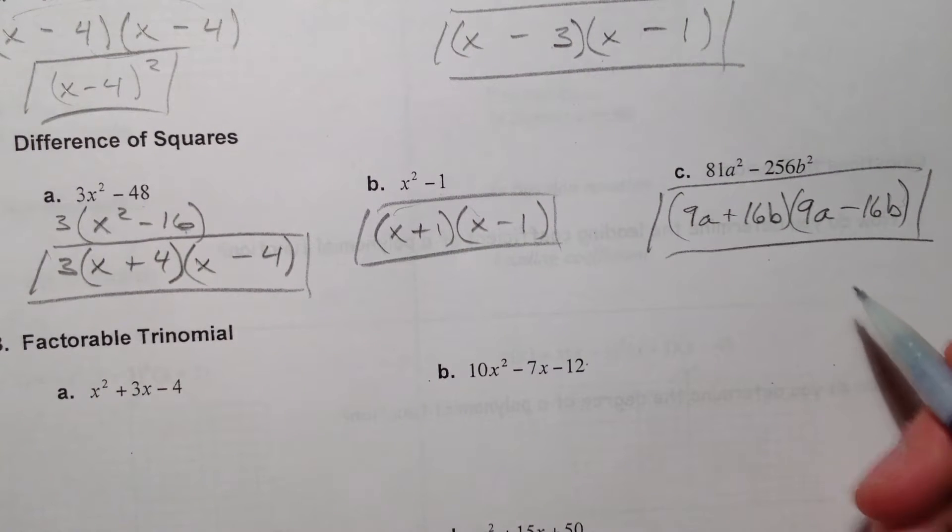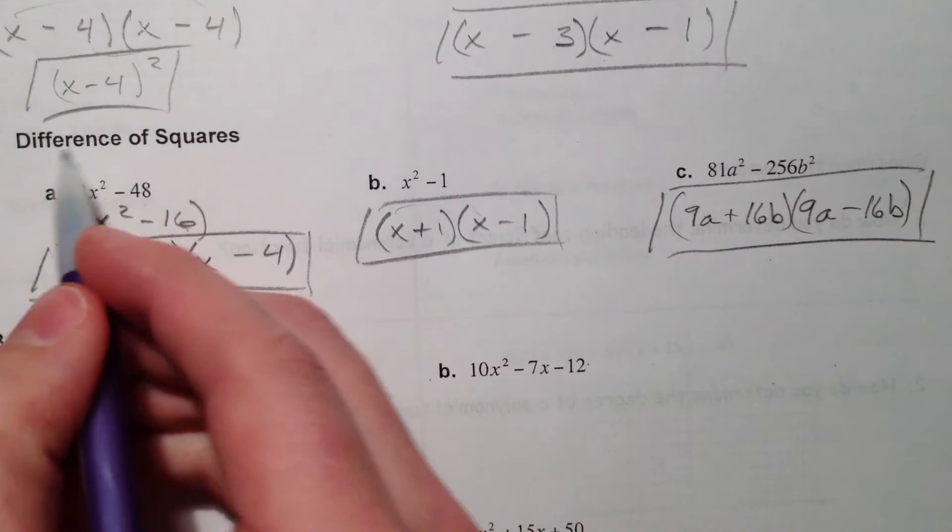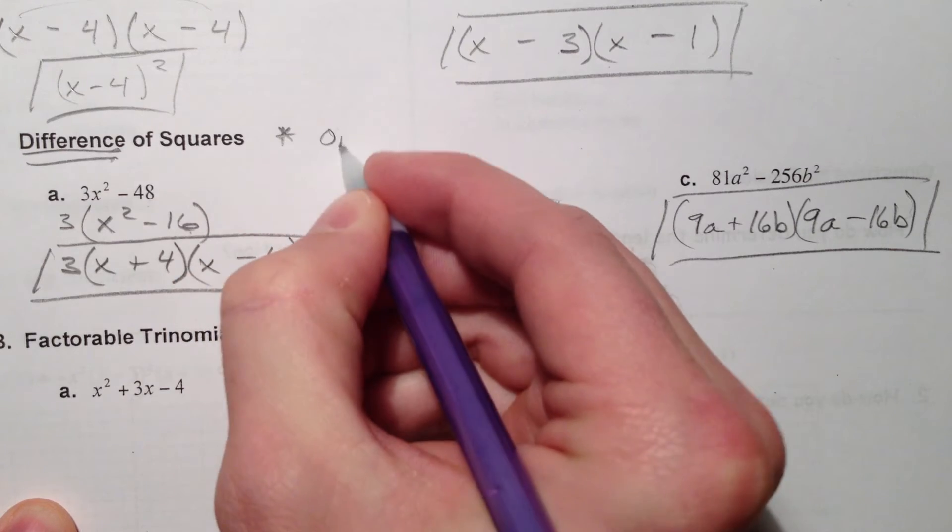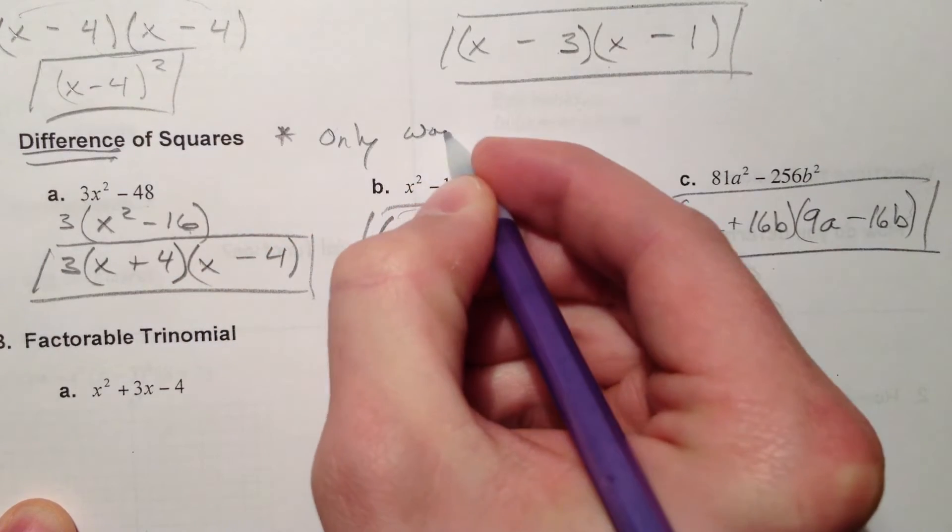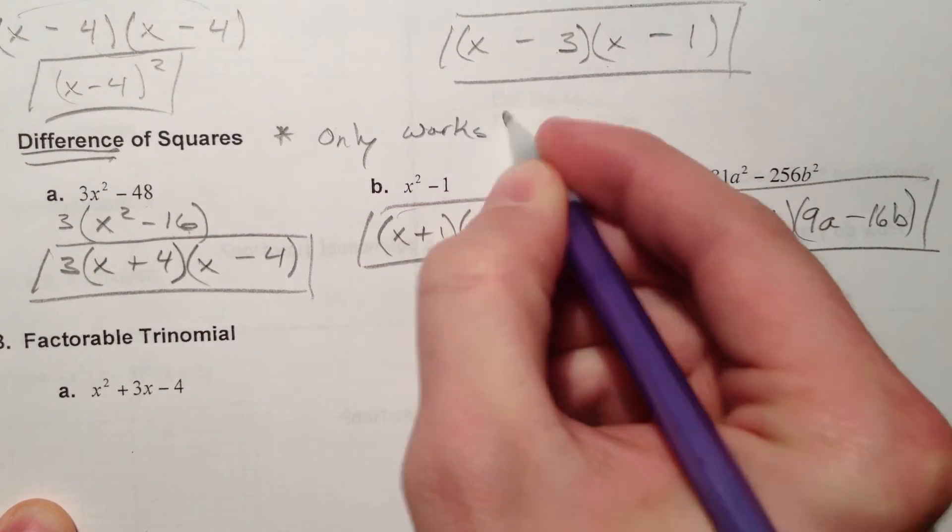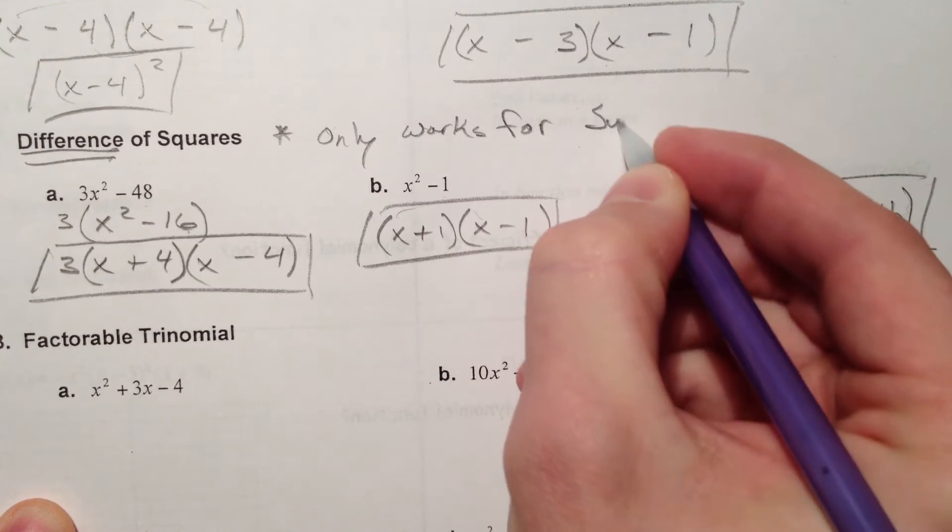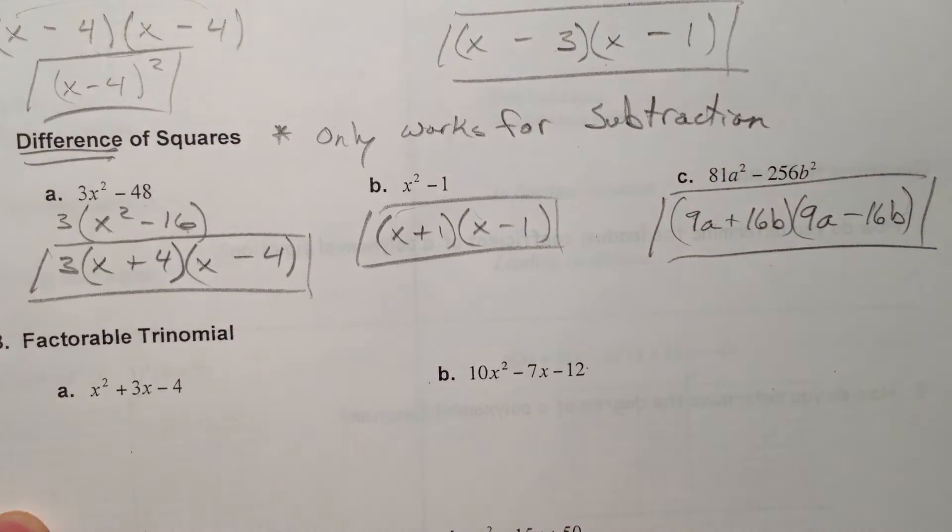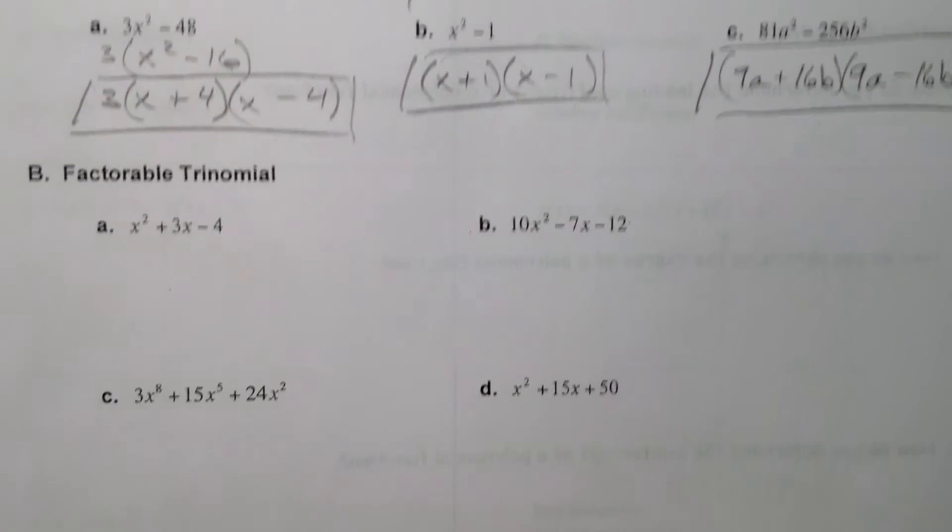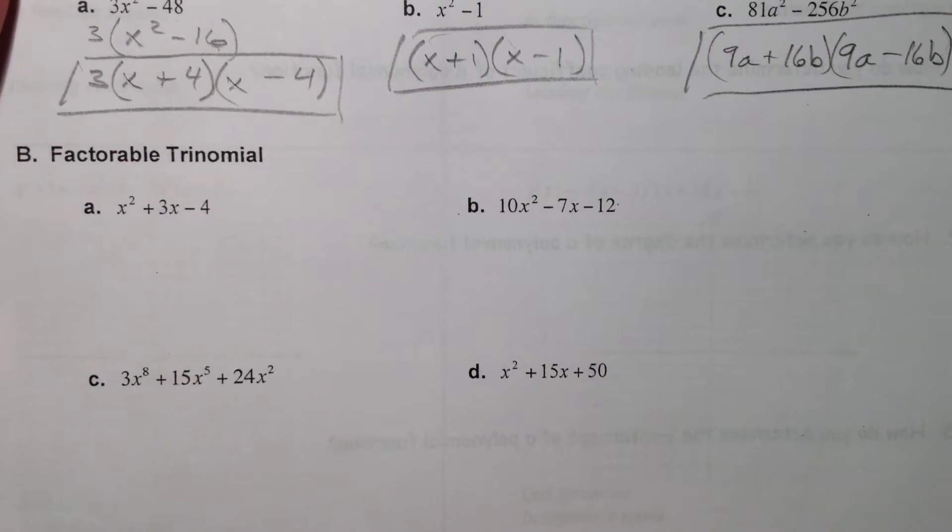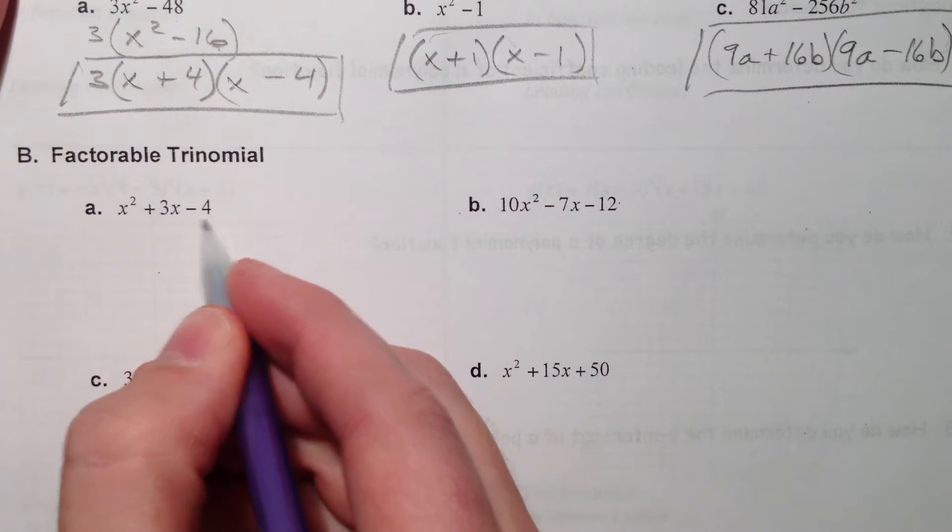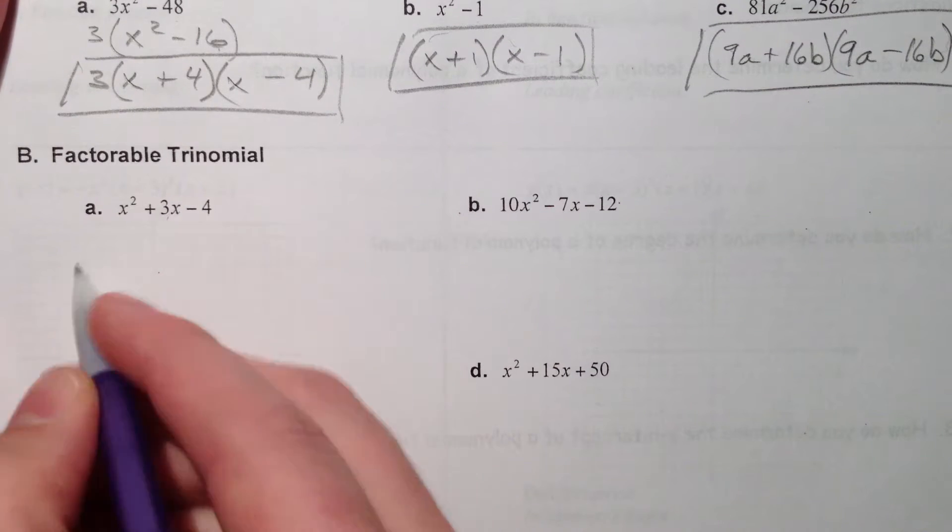Now, keep in mind, this only works for difference. Only works for subtraction. Alright, and factorable trinomials. So the easiest one, kind of already dealt with, what multiplies to a negative 4 and adds to 3?